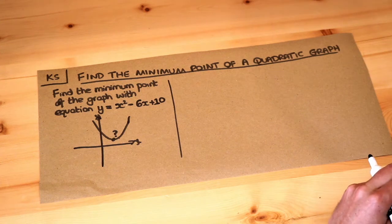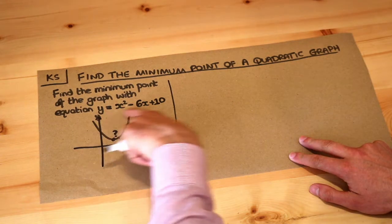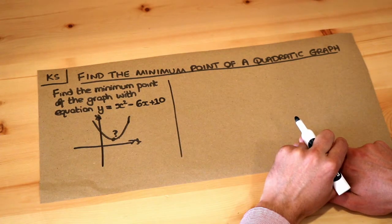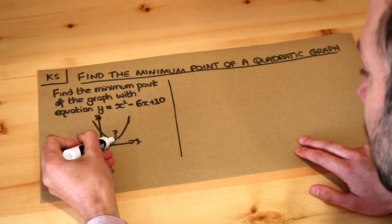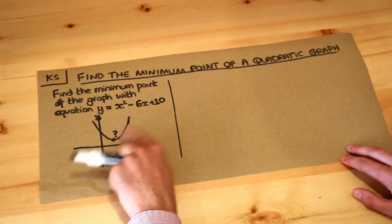Hello and welcome to this Dr Ross Maths key skill video on finding the minimum point of a quadratic graph. We've got a quadratic curve with equation y equals x squared minus 6x plus 10, and we want to find the coordinate of this mystery point at the bottom, the minimum point of this quadratic.